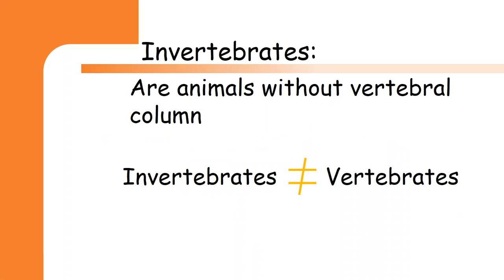Invertebrates are the opposite of vertebrates. Vertebrates are animals that have a vertebral column. So invertebrates are animals without a vertebral column — they don't have bones in their bodies. Animals that do not have bones are called invertebrates.